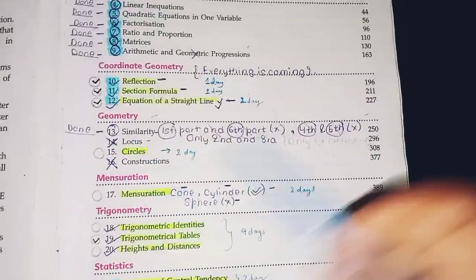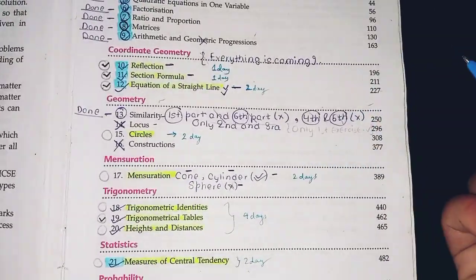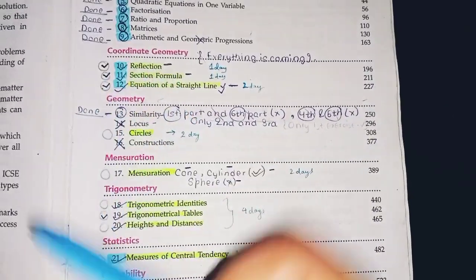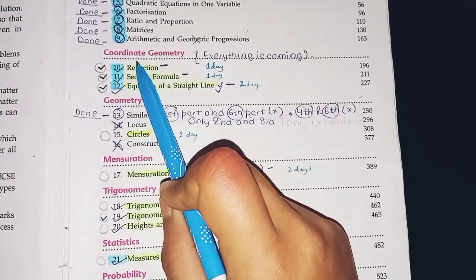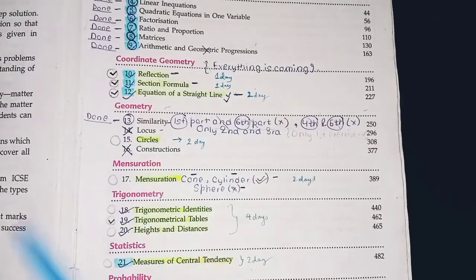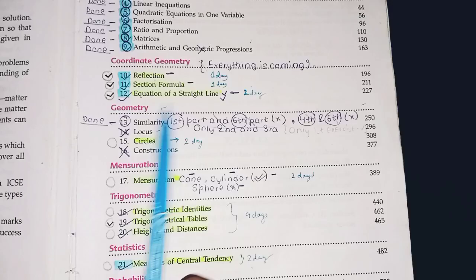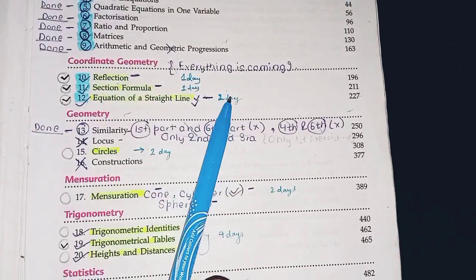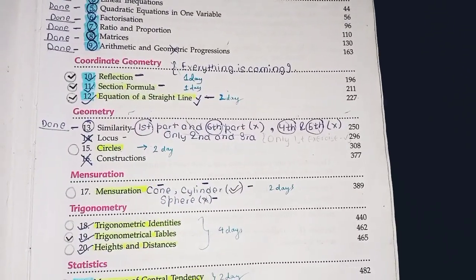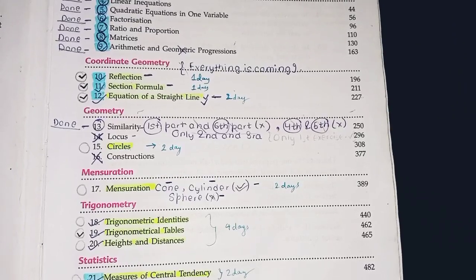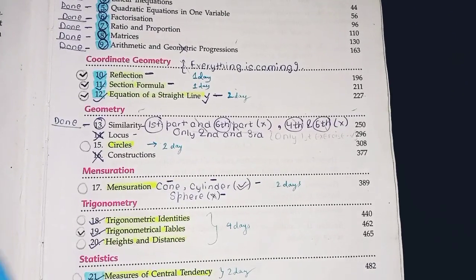Now, I'll tell you how you have to start. We'll move to the chapters ahead and first I'll tell you the syllabus. Now, reflection, it will take one day for you to complete this entire chapter. Then, section formula, only one day. Equation of straight line, you may take two days. Sometimes, it's flummoxing and you'll not be able to solve and get the equation, but you need a lot of practice.